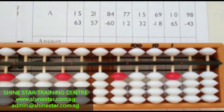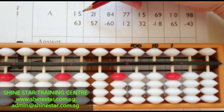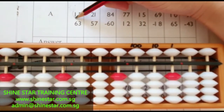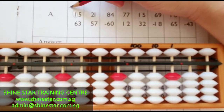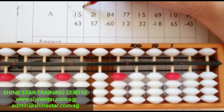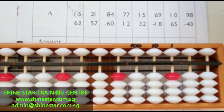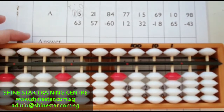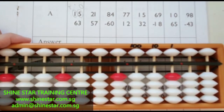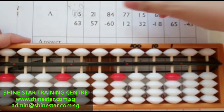Let's look at the question. So this is on the tens, while this five is on the ones. Let's start doing our question. Firstly, you have to use your left hand to clear the abacus and to hold your abacus.